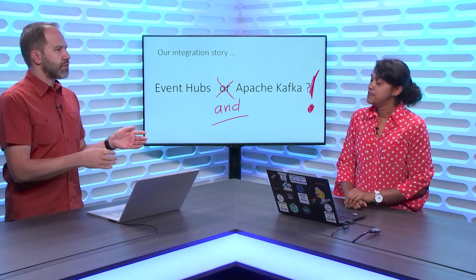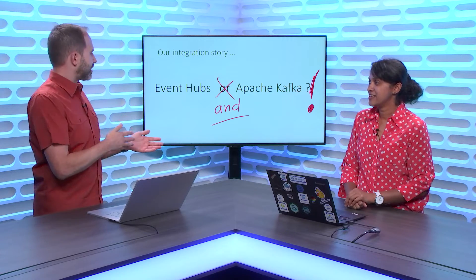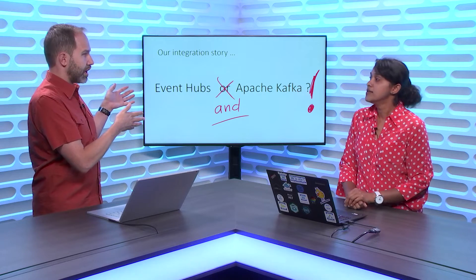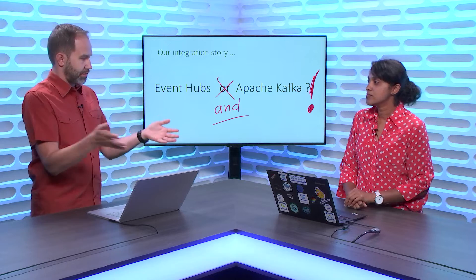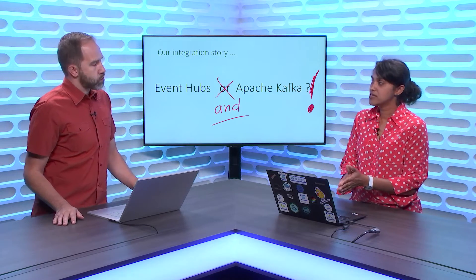This reminds me of when the Cosmos DB team said Cosmos is amazing but doesn't have an open protocol people understand, so they put Mongo in front of it — and now everyone wins. The same thing is happening here: you're bringing Kafka to Event Hubs so they work together, and people who have existing producers can just get involved. The biggest advantage is you're not changing any of your clients, your code, your producers, your applications, your tools, or your frameworks.